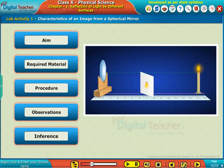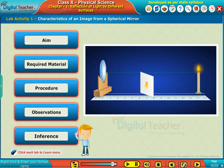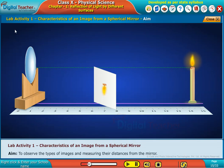Lab activity: characteristics of an image from a spherical mirror. Click each step to learn more. The aim of this activity is to observe the types of images and measure their distances from the mirror.